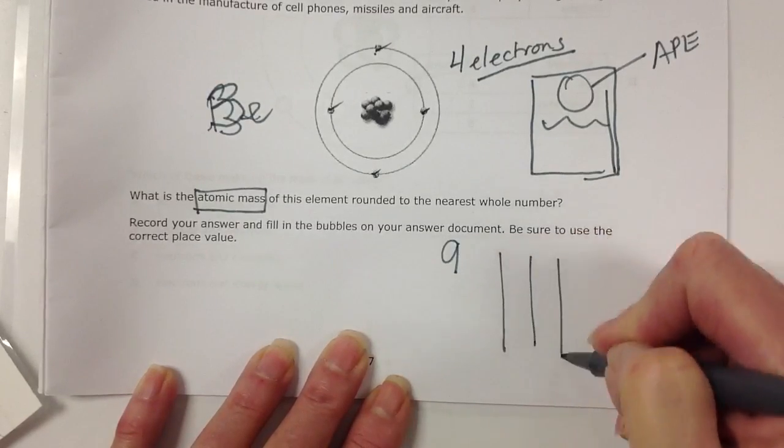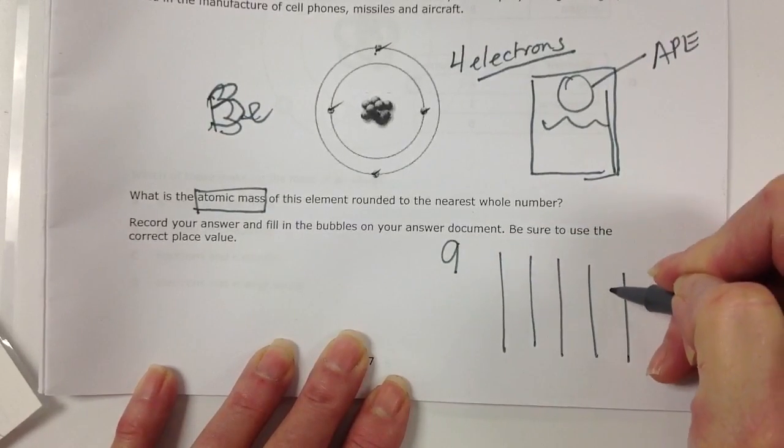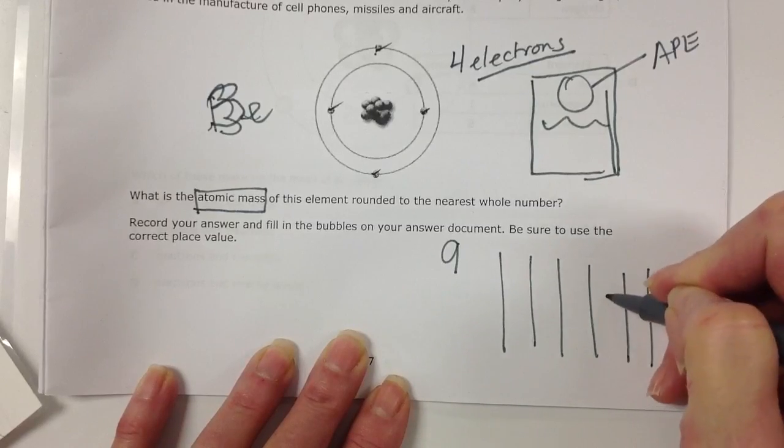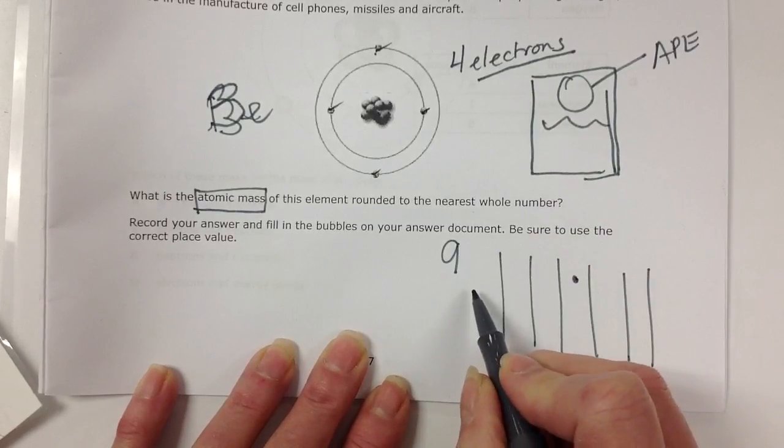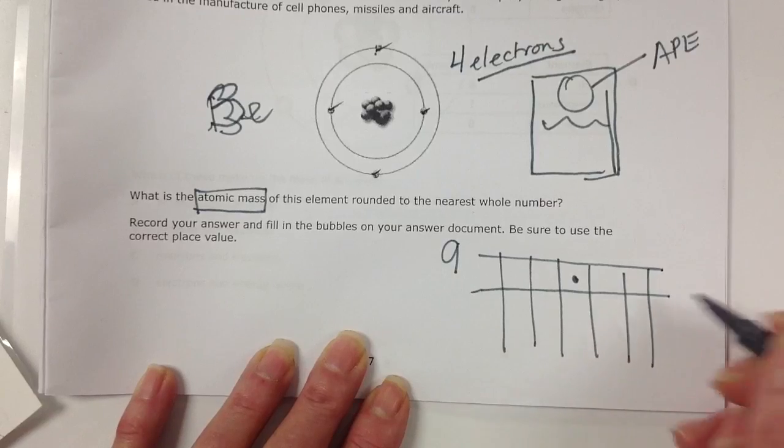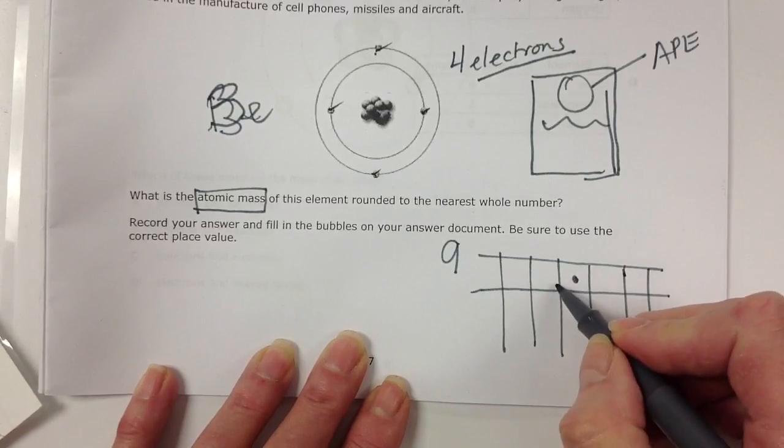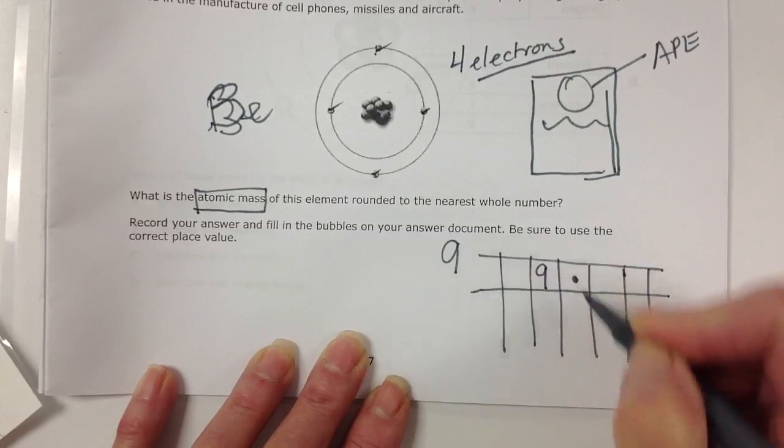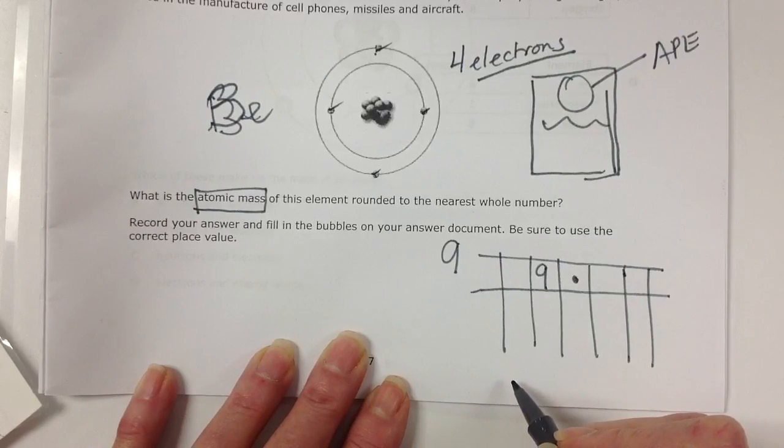So if we had a grid here, just to show you, something like that, right? So where would that whole number go? Right in front of the decimal, because it is a whole number. That's what your answer should look like.